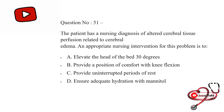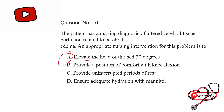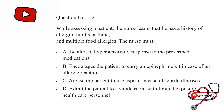A patient has a nursing diagnosis of altered cerebral tissue perfusion related to cerebral edema. An appropriate nursing intervention for this problem is to: option first: elevate the head of the bed 30 degrees; second: provide a position of comfort with knee flexion; third: provide uninterrupted periods of rest; last: ensure adequate hydration. The correct answer is A — elevate the head of the bed 30 degrees, to decrease ICP.